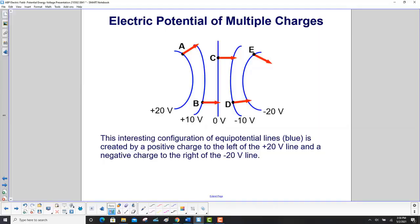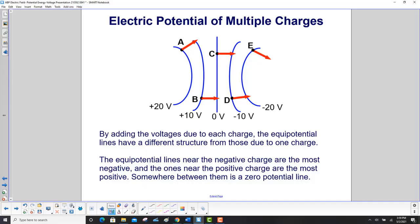This interesting configuration of equipotential lines, which are in blue, is created by a positive charge somewhere over here and a negative charge somewhere over here. By adding the voltages due to each charge, the equipotential lines have a different structure from those due to just one charge.